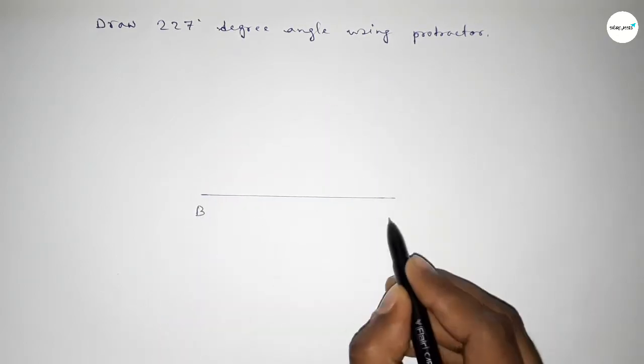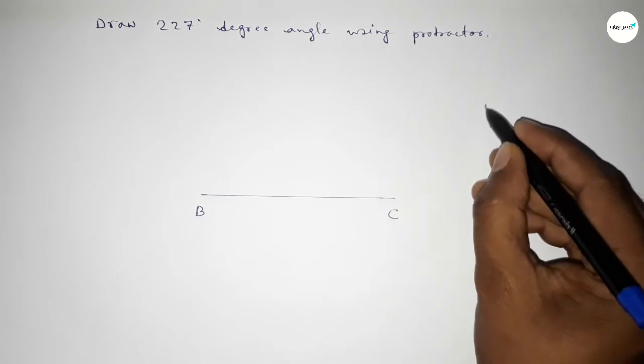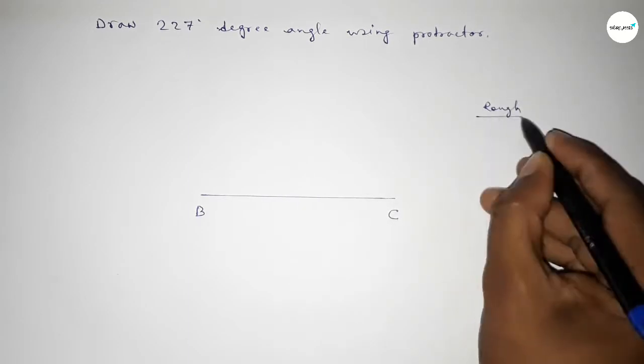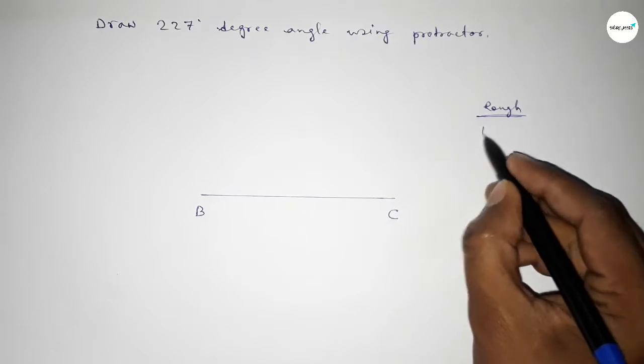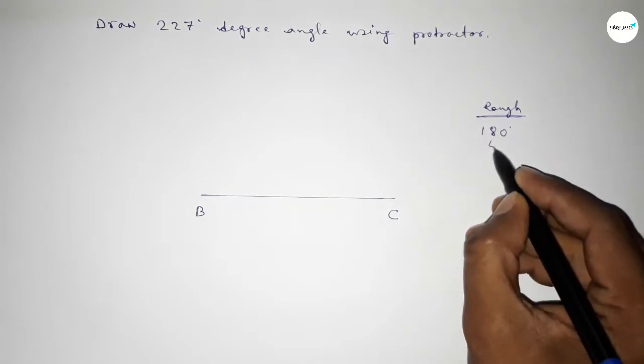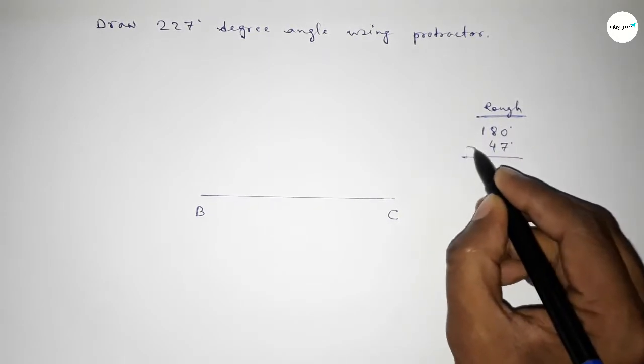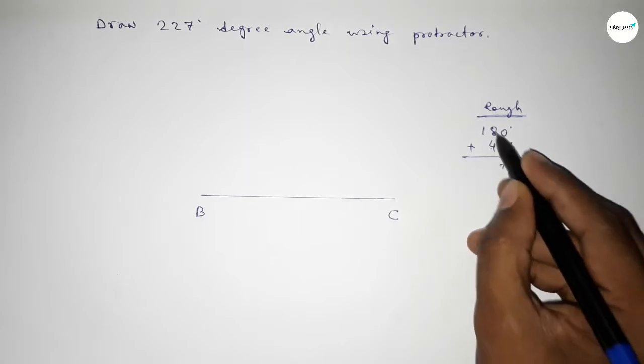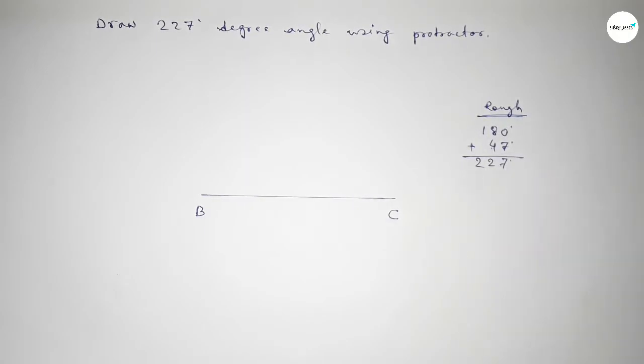And taking here point B and here C. Now roughly discussing some calculation here: so if we add 47 degree angle with 180 degree, then we can get 227 degree. So first we have to count 180 degree.